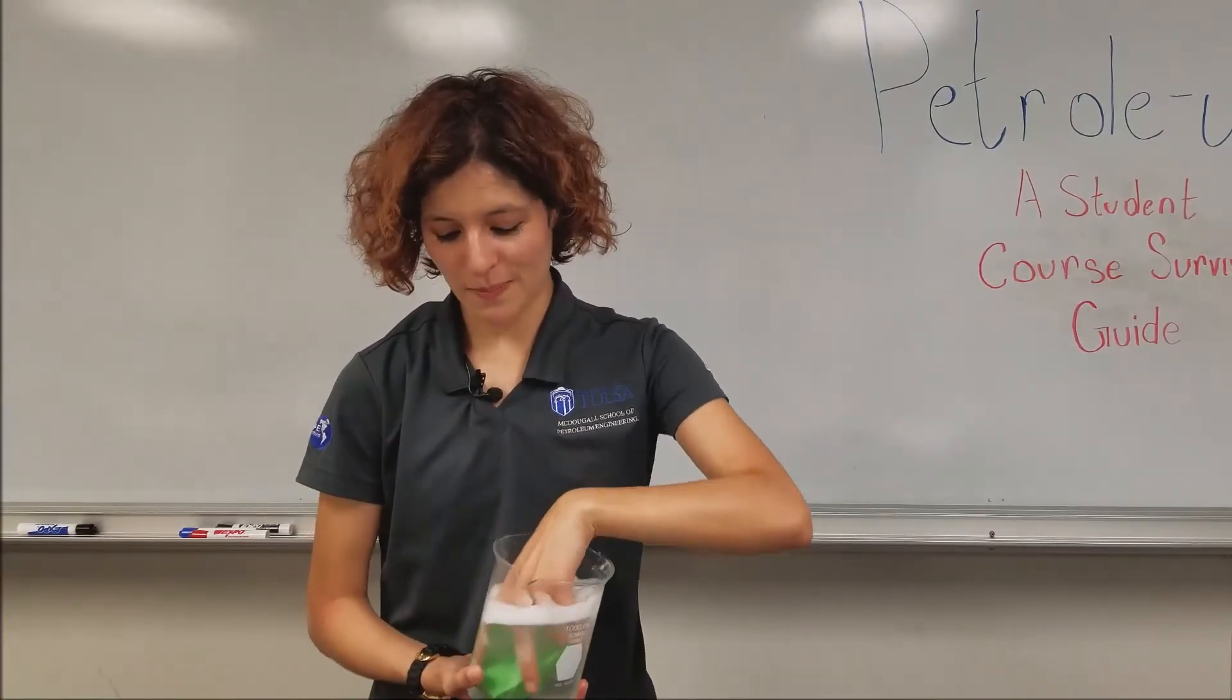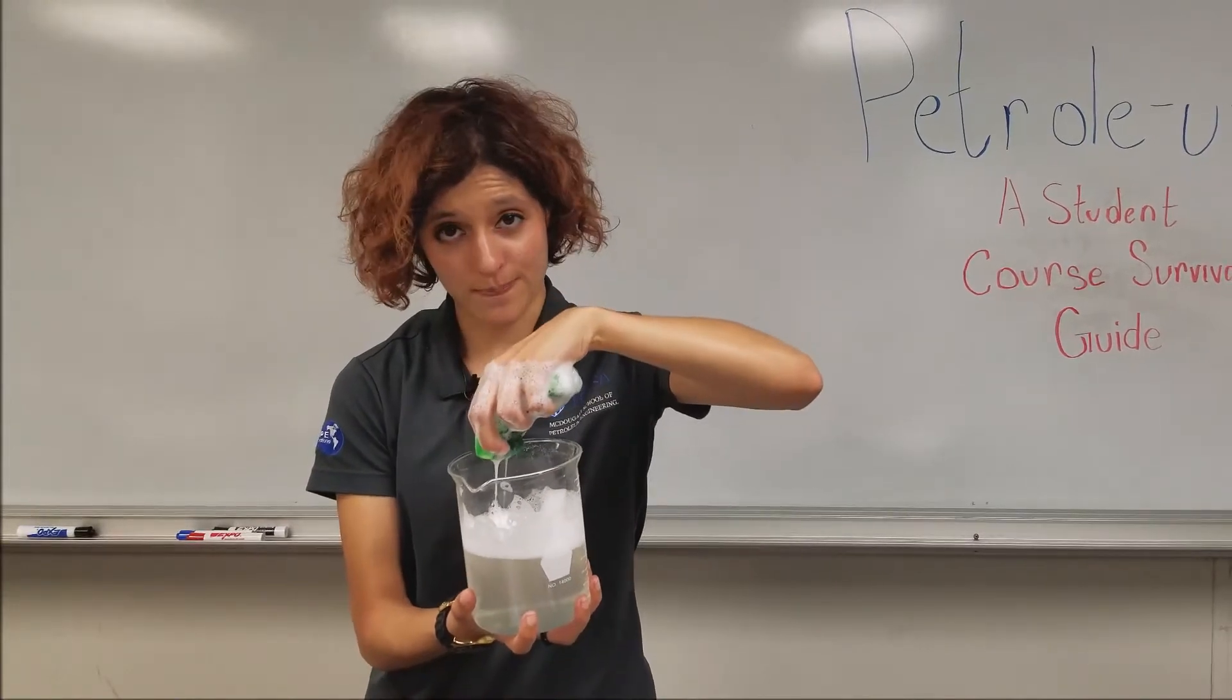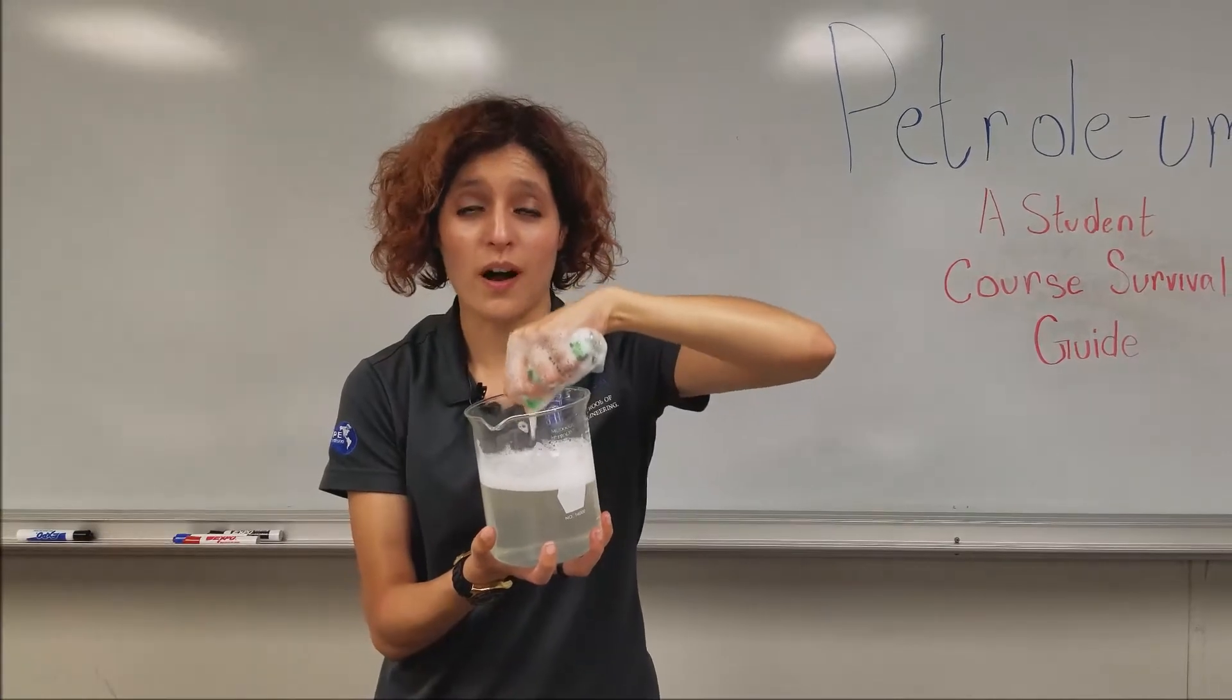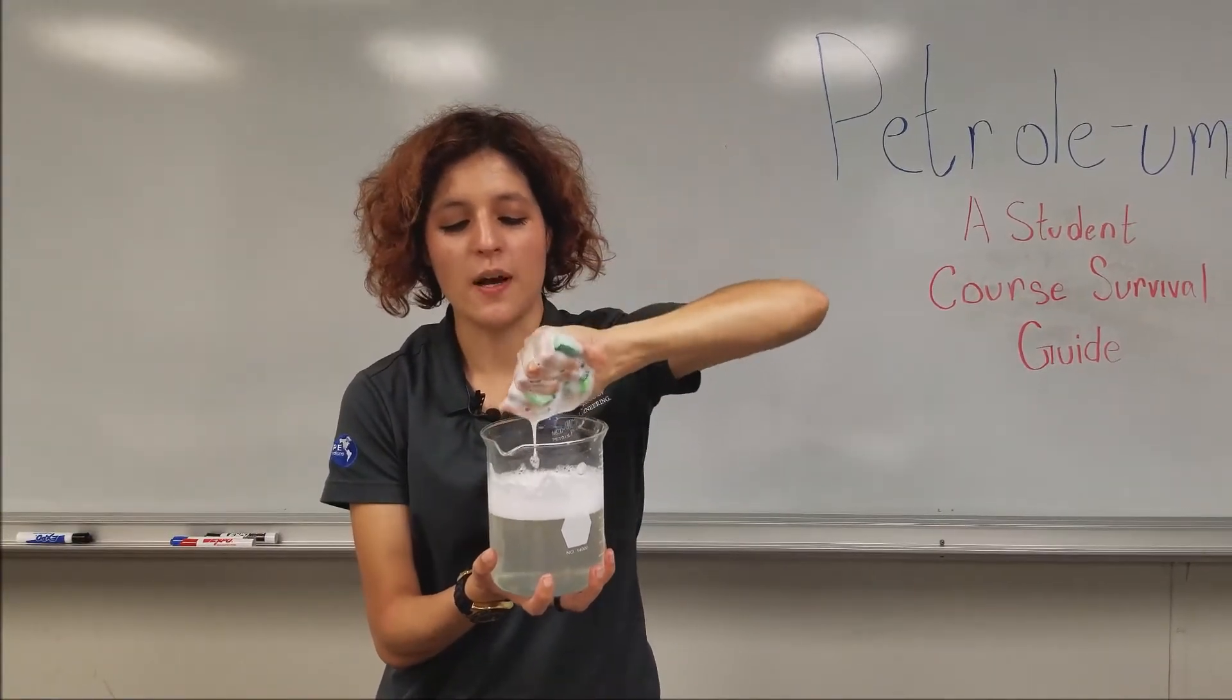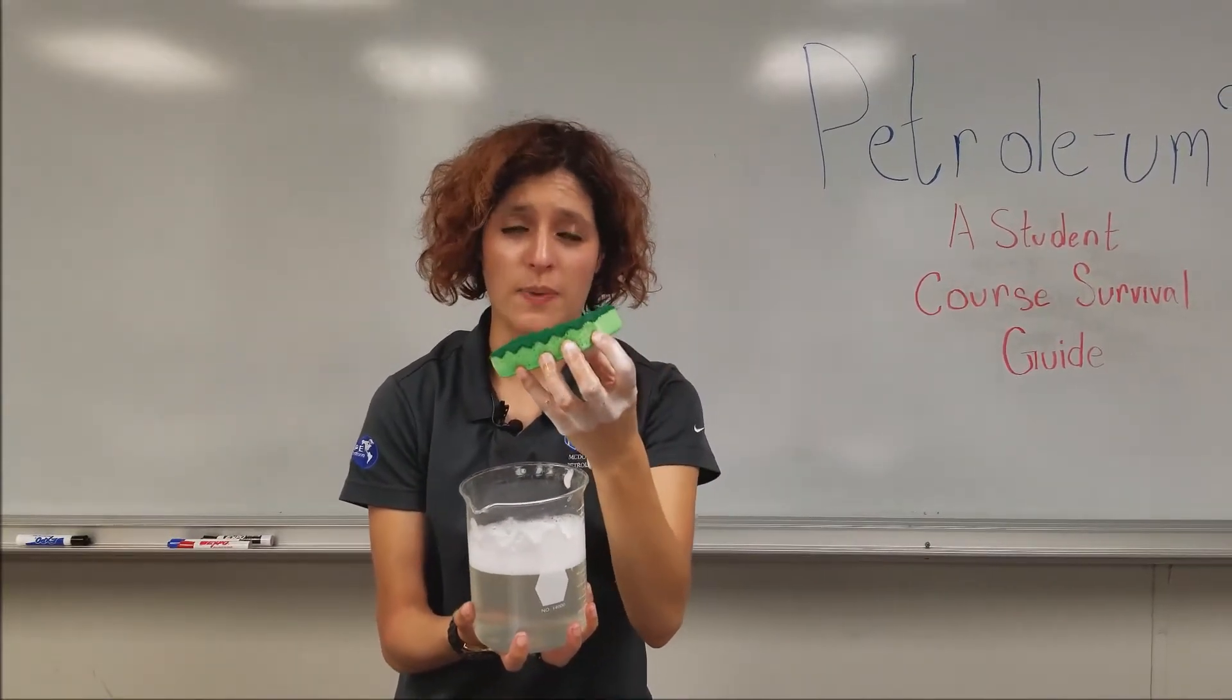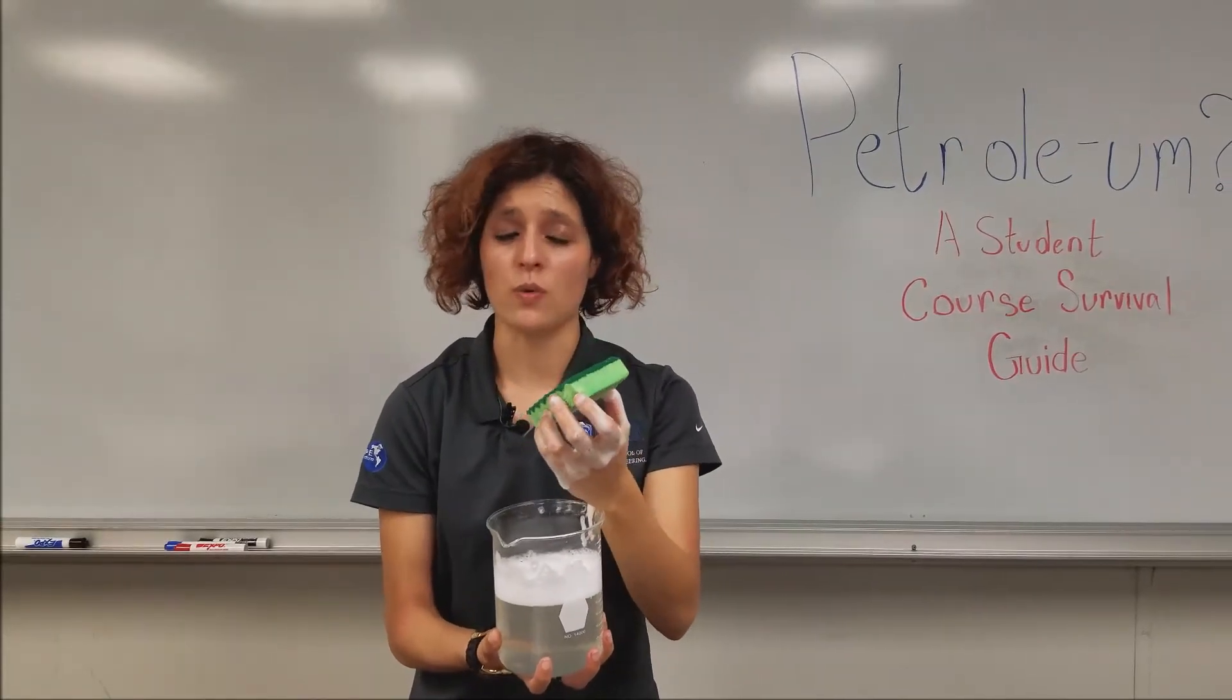When the sponge becomes saturated in fluid, I can squeeze it to produce the water and soap. I can keep squeezing it and more water and soap will come out. And I can keep squeezing, but I won't be able to get all of the water and soap out of the sponge. Just like a reservoir, there's always going to be some residual oil left.